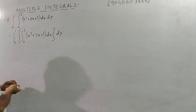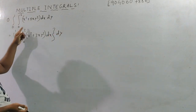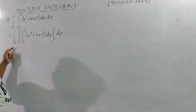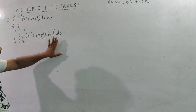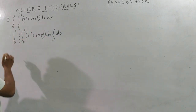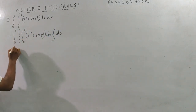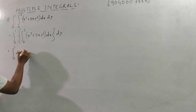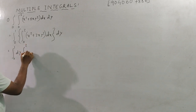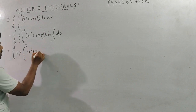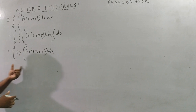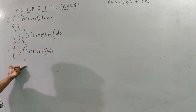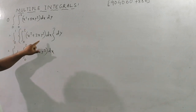Looking at the limits: 0 to 2 is the x limit and 0 to 1 is the y limit. So I have to do dy first. On the dy side, 0 to 1, we have to do the x integration: from 0 to 2, x² + 3xy². So first I do the x integration.